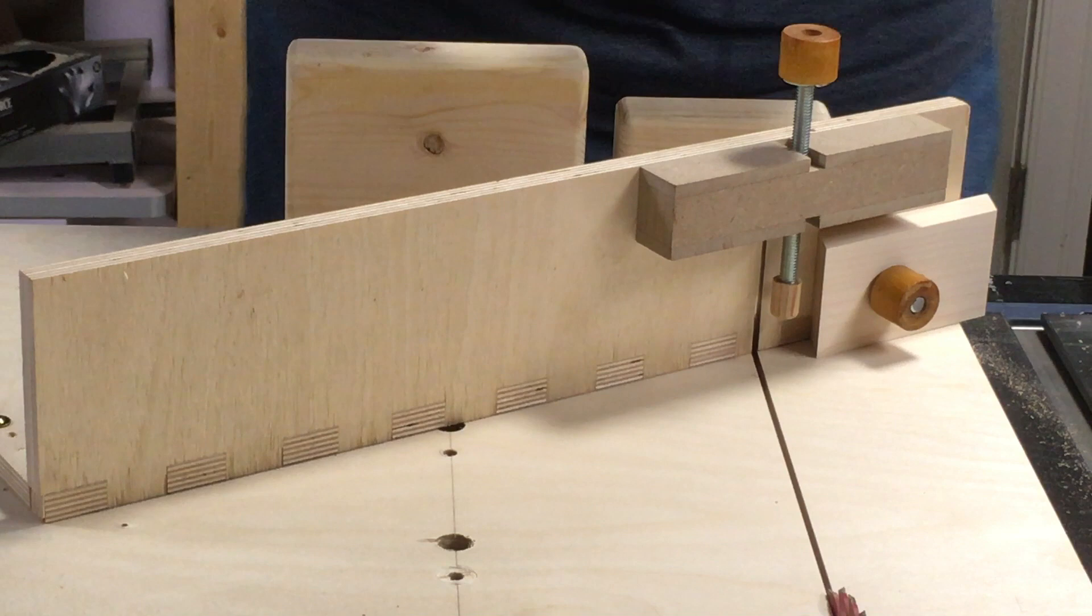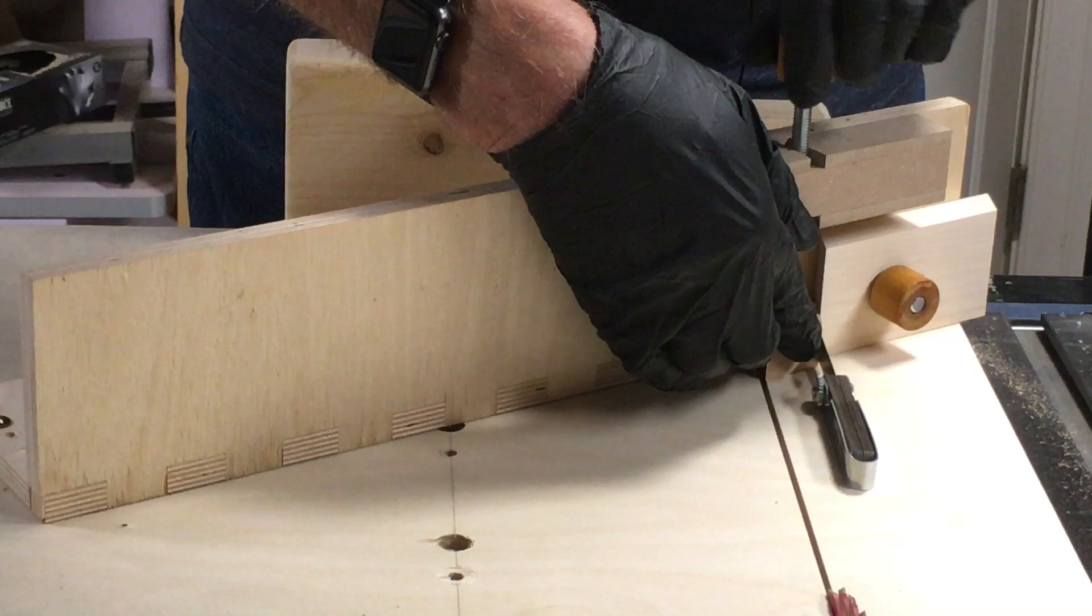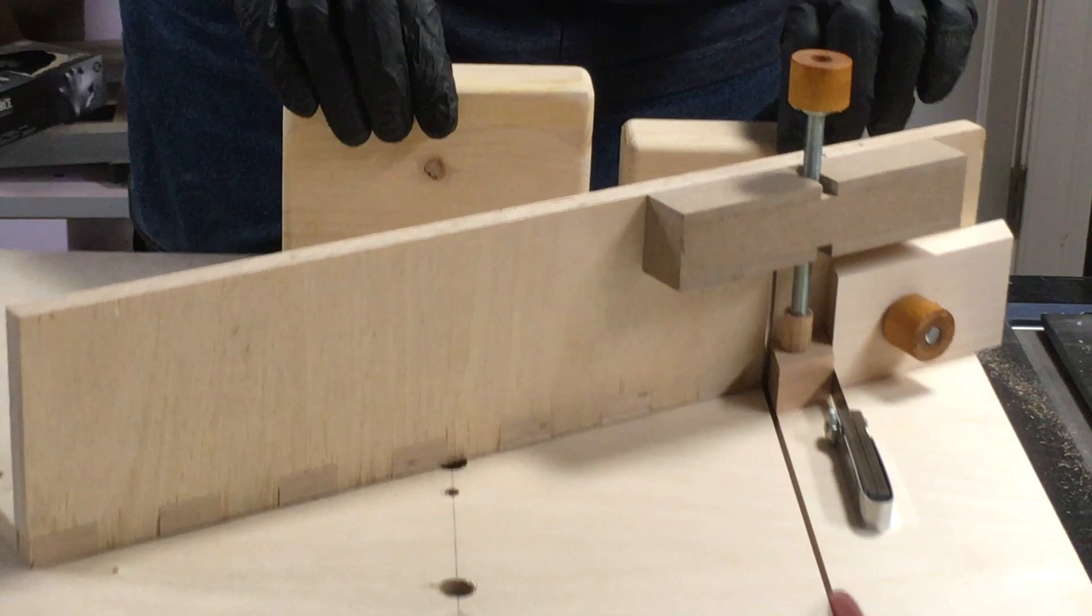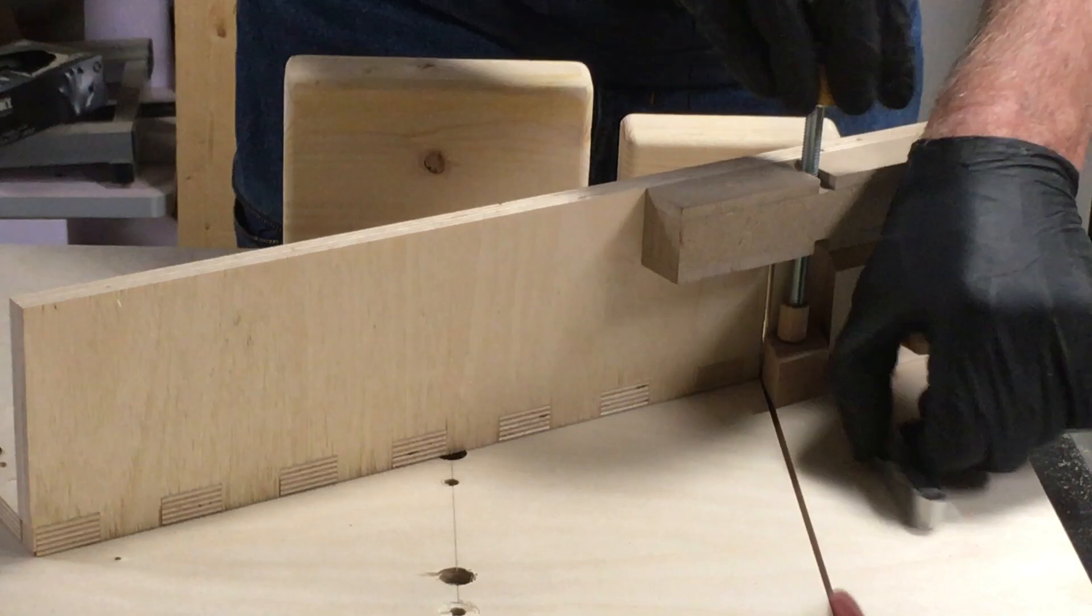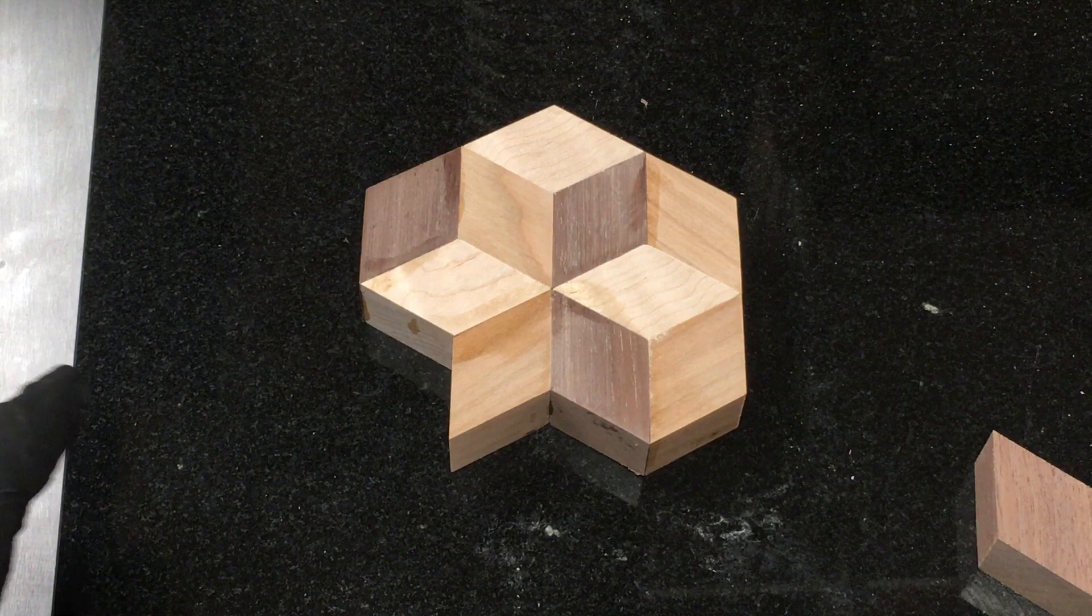To trim it, I put the piece back into the jig, but I put that same feeler gauge blade between the piece and the stop block. Tighten it down. Now the piece fits perfectly, and I've gone ahead and glued it in.